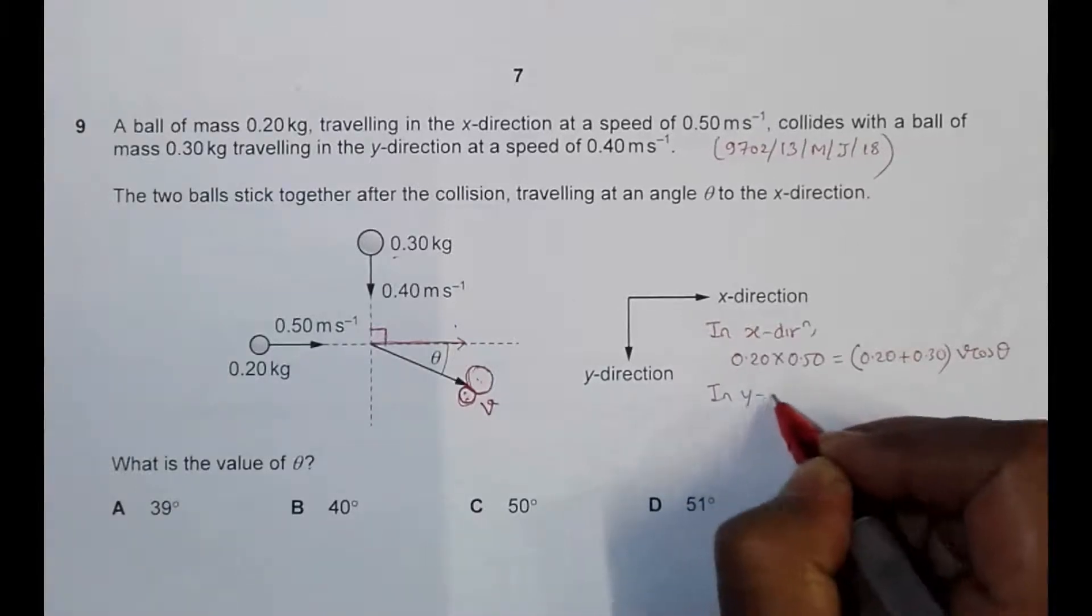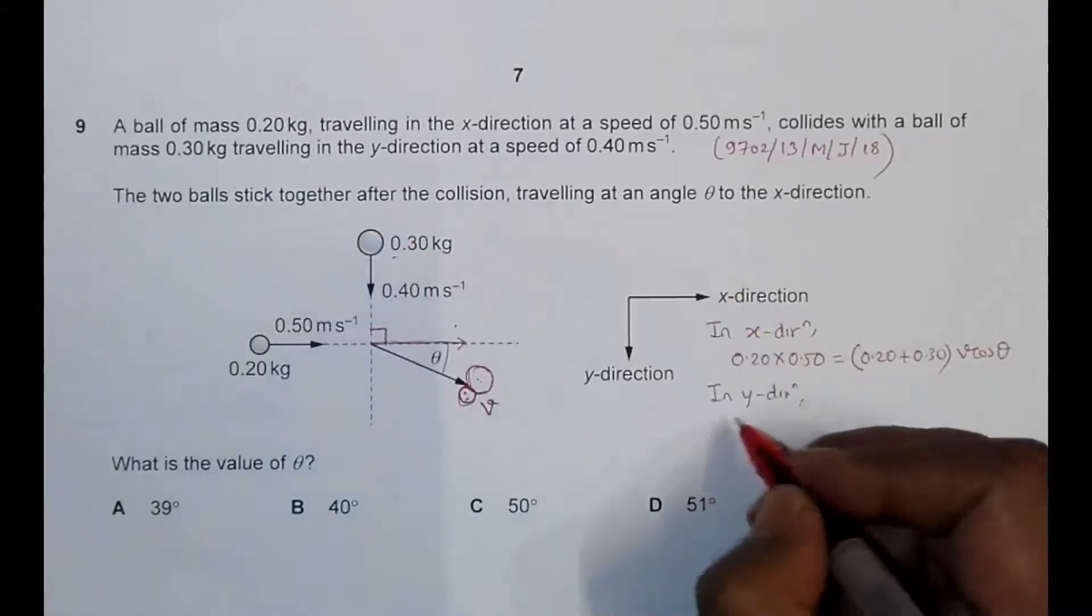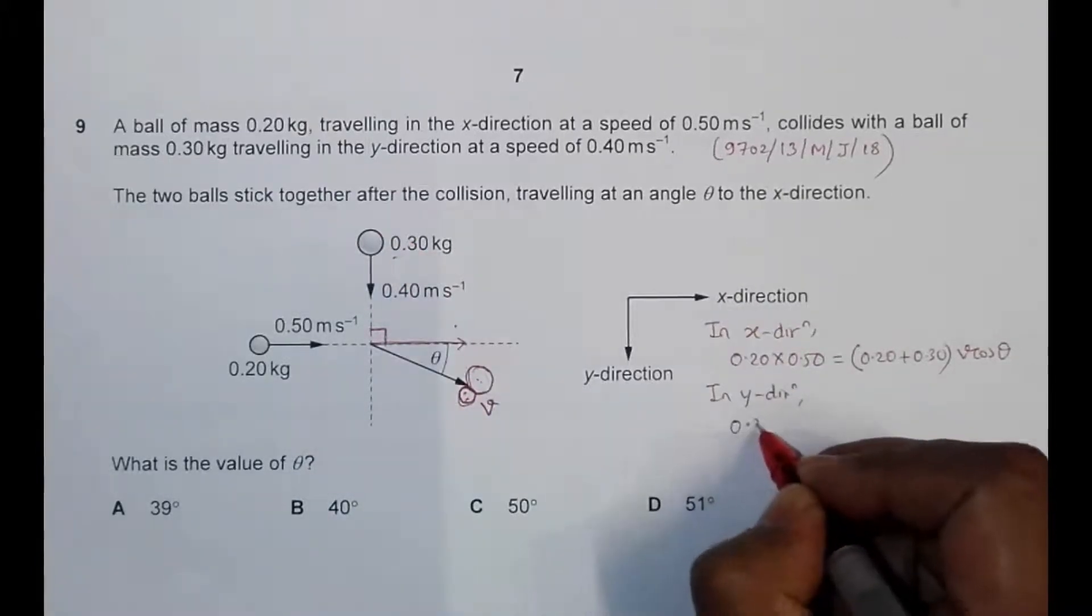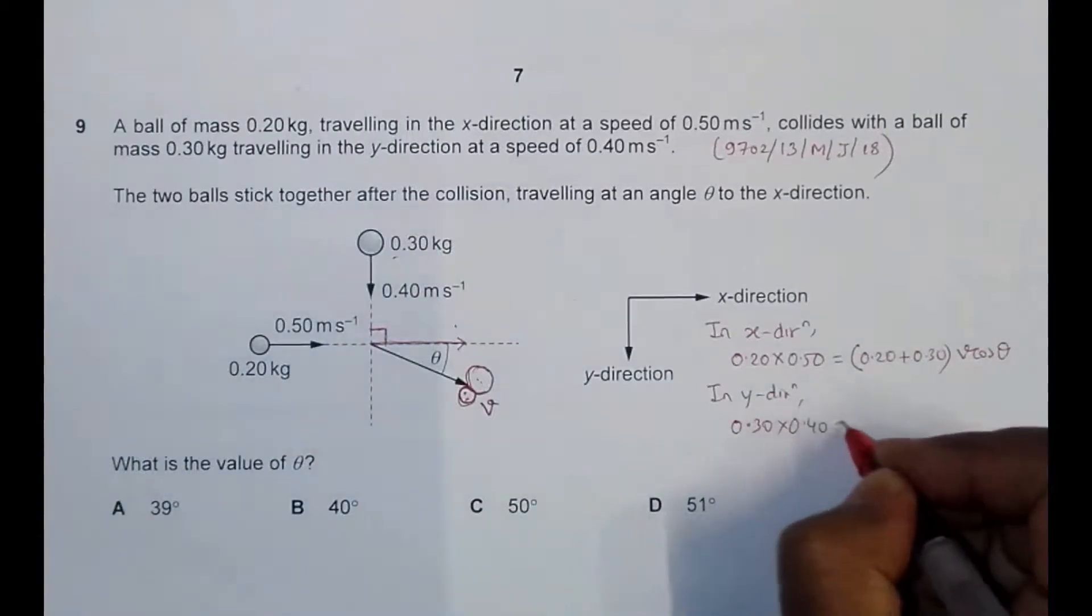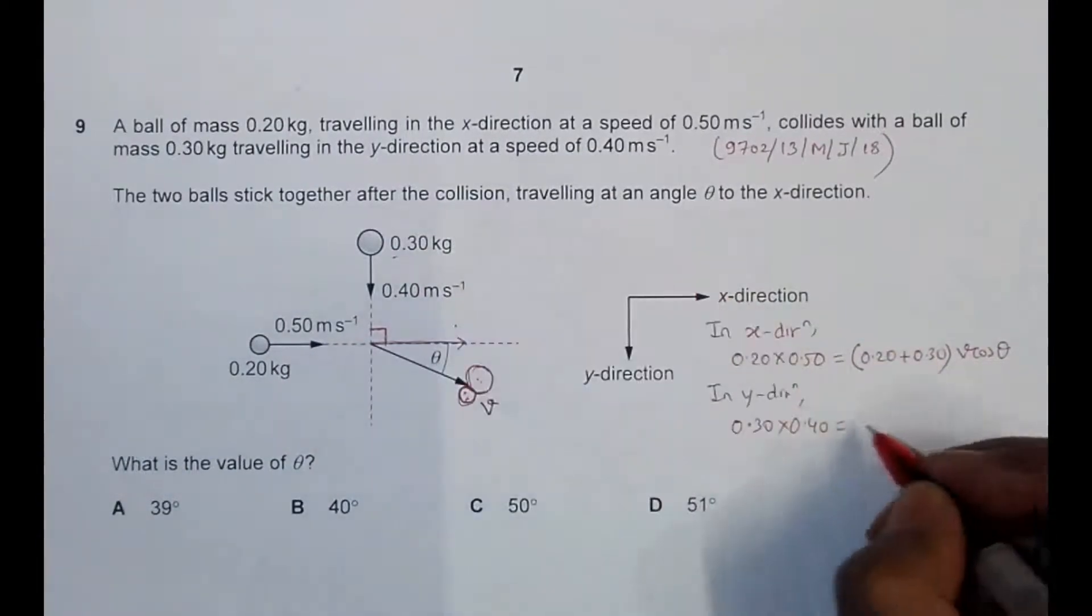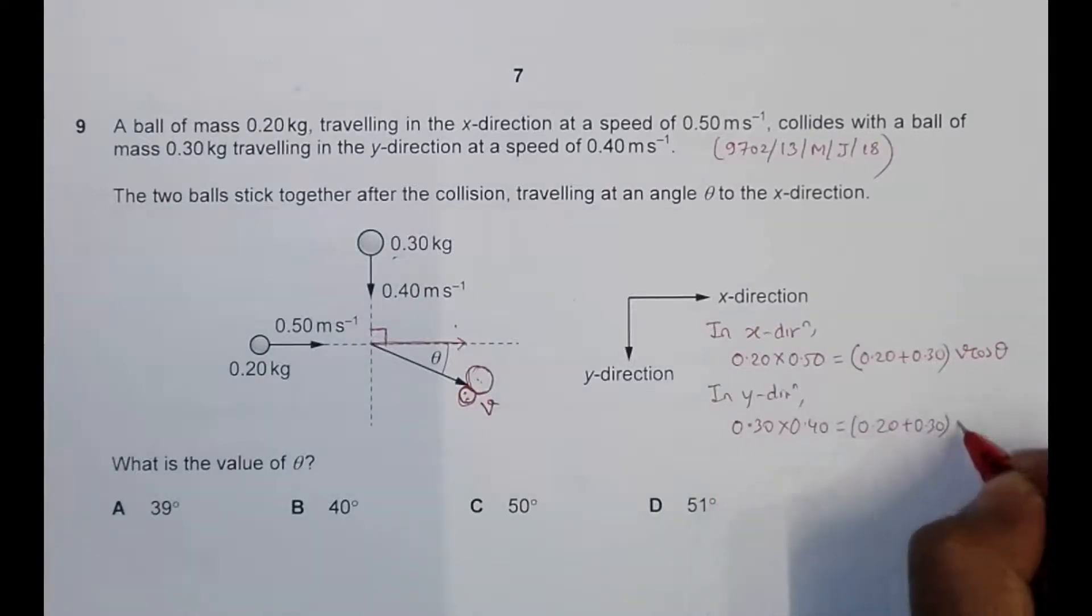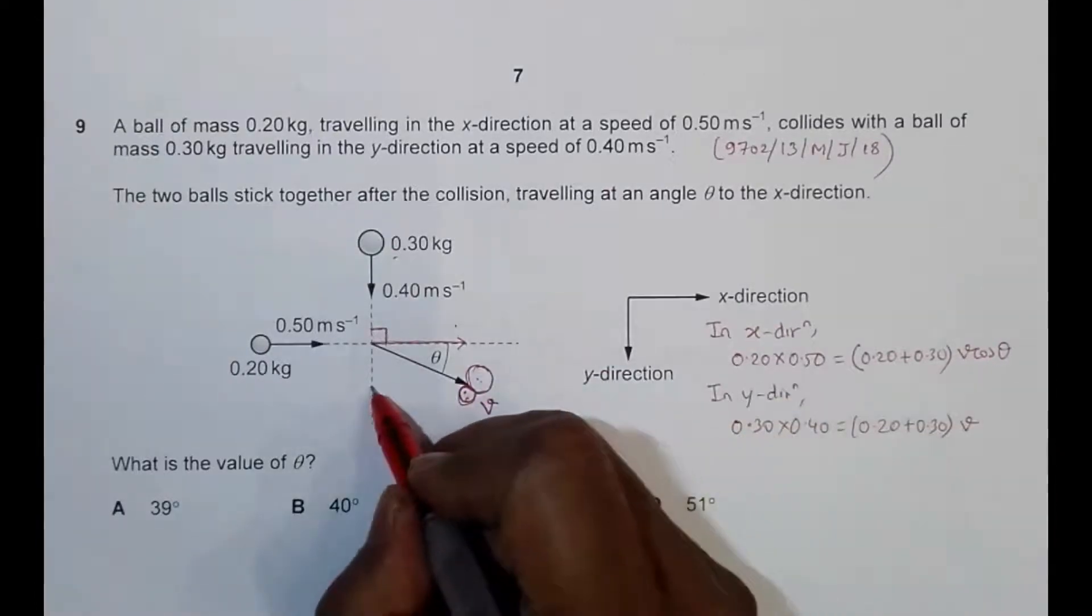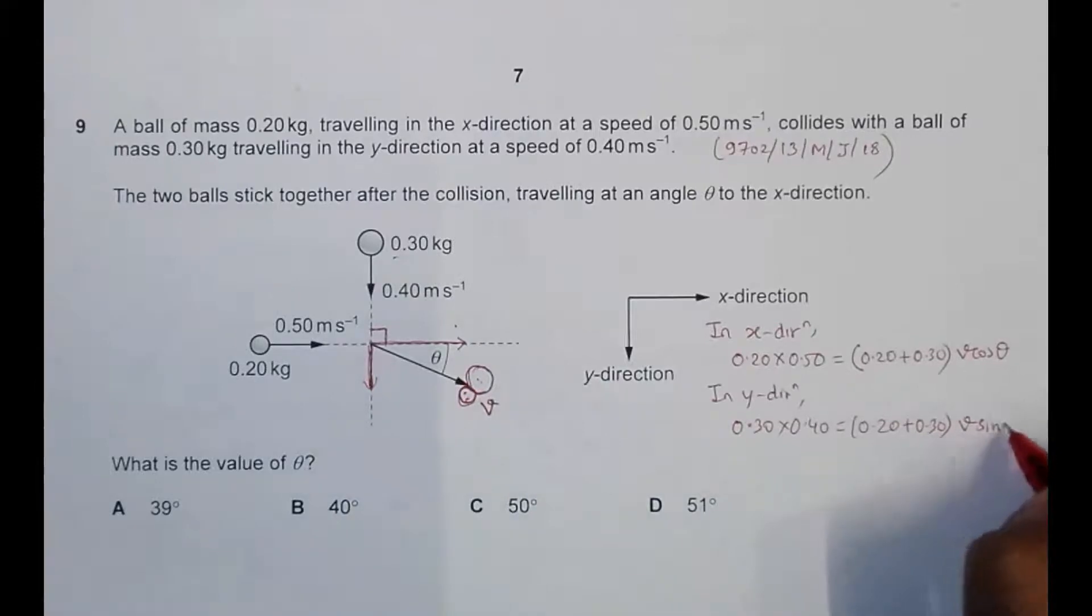So now in y direction, the equation will be like this. The mass is 0.30 into velocity 0.40 equals the combination 0.20 plus 0.30, then v, and the component here should be v sin theta. So since theta is this angle, it should be v sin theta.